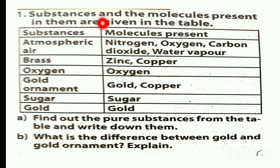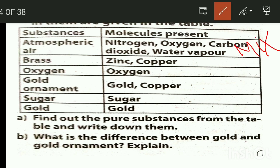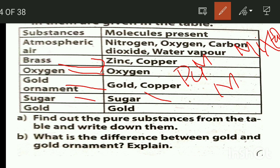Substance and the molecules present are given in a table. Find out the pure substance from the table and write it down. Atmospheric air — nitrogen, oxygen and carbon dioxide — is a mixture. Brass is a mixture. Oxygen is a pure substance — only one type of molecules is present. Gold ornaments is a mixture. Sugar is a pure substance. Gold is a pure substance.